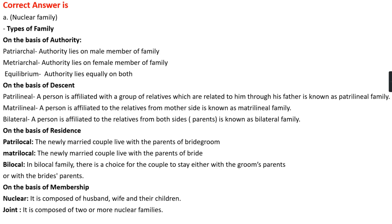On the basis of descent, families are of three types: patrilineal, matrilineal, and bilateral. Patrilineal is when a person is affiliated with relatives related through his father; matrilineal is when a person is affiliated with relatives from the mother's side; and bilateral is when a person is affiliated with relatives from both sides. On the basis of residence, there are three types: patrilocal, matrilocal, and bilocal. If the newly married couple lives with the groom's parents, it is patrilocal; with the bride's parents, it is matrilocal; and in bilocal, the couple has a choice to stay with either. On the basis of membership or internal structure, there are two types: nuclear family — husband, wife, and their children — and joint family, composed of two or more nuclear families.